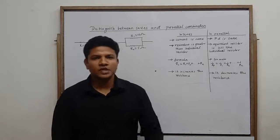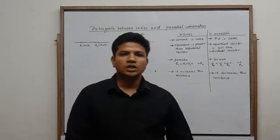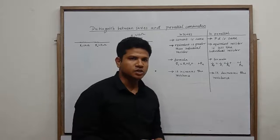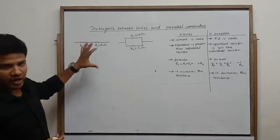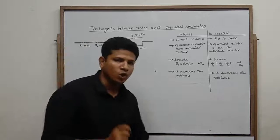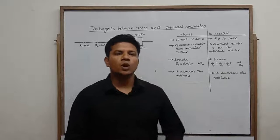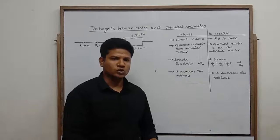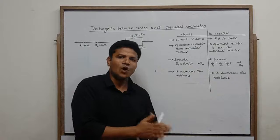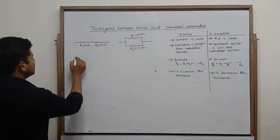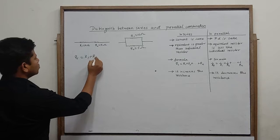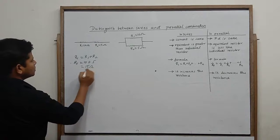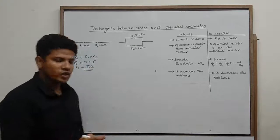Welcome back. In the previous lecture we completed series and parallel combinations. Let's understand more about these two combinations. We have two resistors R1 and R2, where R1 is 10 ohms and R2 is 5 ohms. In series, the equivalent resistance is R1 plus R2, which is 10 plus 5 equals 15 ohms. This is the value of the series combination.